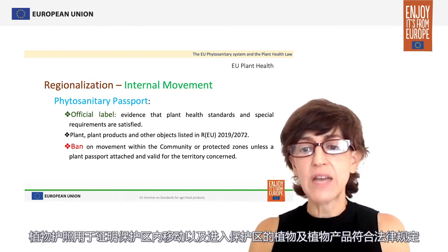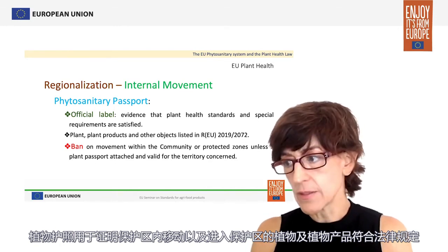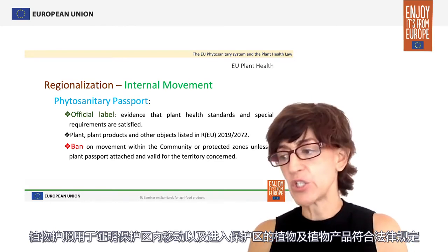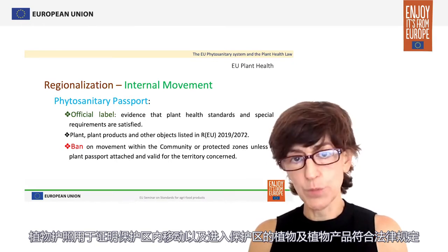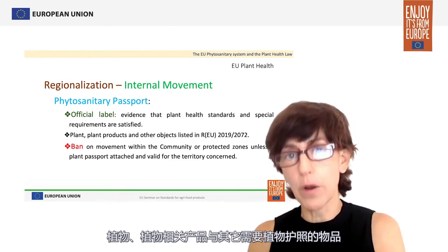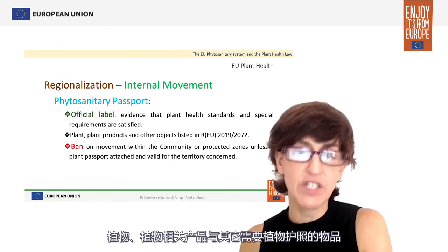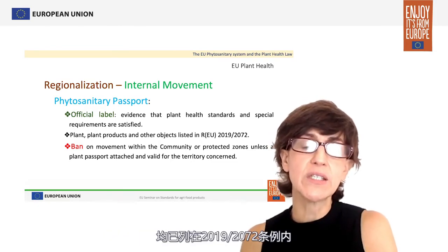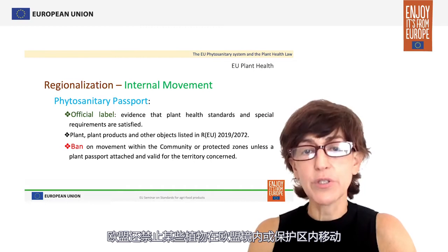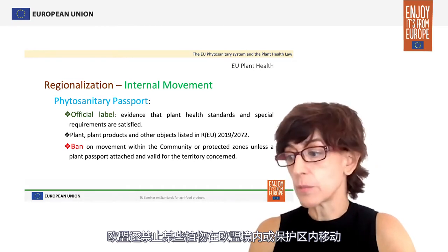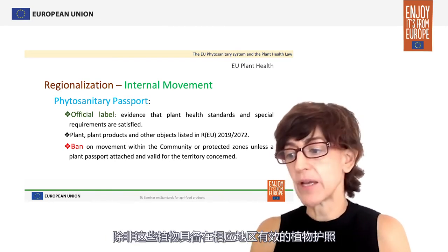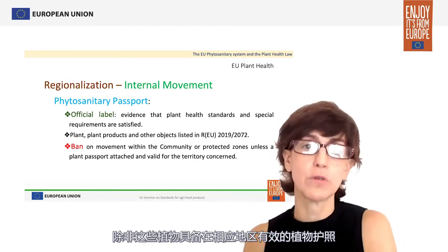A plant passport is an official label for the movement of plants within the Union territory and, where applicable, within protected zones. It attests compliance with all the requirements set out in the legislation for movement into and within protected zones. The plants, plant products and other objects for which a plant passport is required are listed in Regulation 2072 of the year 2019. The European Union also establishes a ban on movement for certain plants within the territory of the Union or in protected zones, unless these plants have a valid plant passport attached.